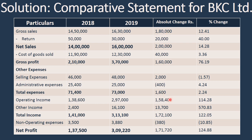These figures of absolute change tell us whether there has been an increase or a decrease, and by how much there has been a change. The statement also gives us the percentage change values. For gross sales, the absolute change of 1 lakh 80,000 divided by the previous year's value of 14 lakhs 50,000, multiplied by 100, gives 12.41%. In the case of net sales, a change of 2 lakh rupees compared with 14 lakhs of the previous year multiplied by 100 gives 14.28%.